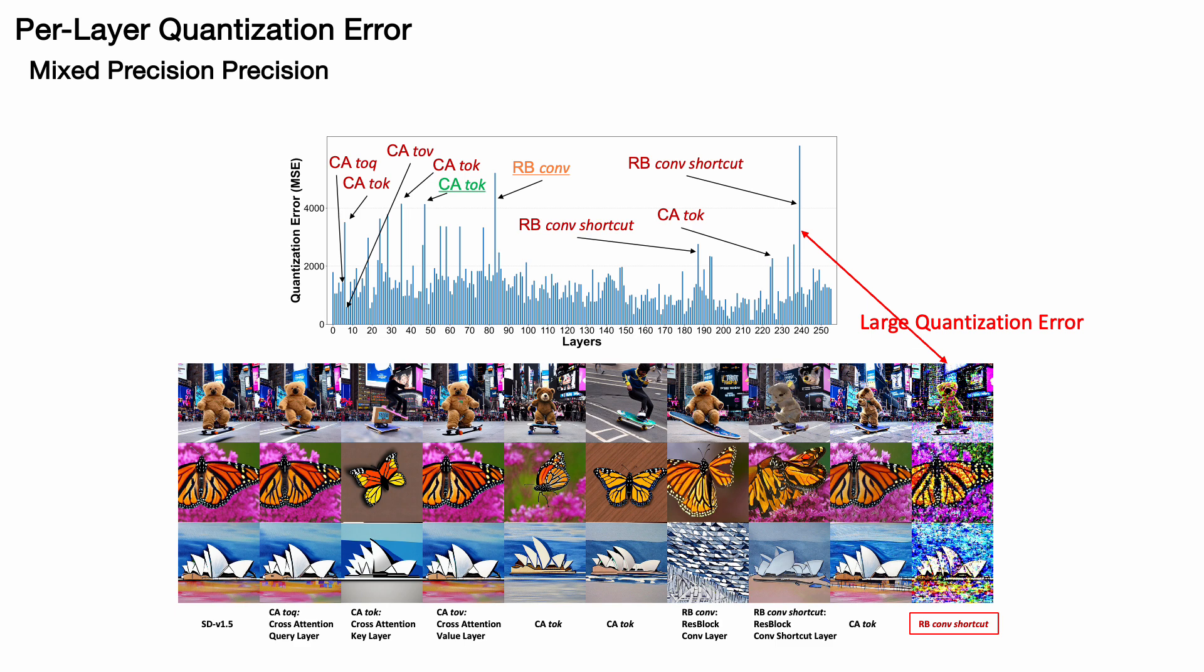This figure demonstrates that different layers have distinct impacts on quantization. For example, the last convolutional shortcut layer in the residual blocks is the most sensitive in terms of MSE values and visual impact. Therefore, MSE can effectively reflect the quantization sensitivity and importance of each layer.